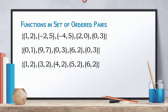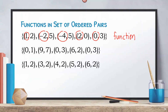If you were given a set of ordered pairs to determine if it is a function or not, remember that the values of x should be distinct. Looking at this first example, notice the values of x are different — we have 1, negative 2, negative 4, 2, and 0. Thus, each value of x is being paired to only one value of y. Therefore, this set of ordered pairs is a function. On the second one, notice that 0 is being paired to 1, and at the same time the same value of x, 0, is being paired to 3 as well. Therefore, this set of ordered pairs is not a function.